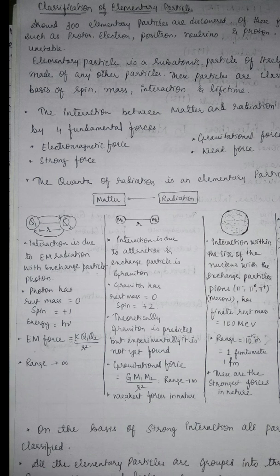These subatomic particles — we all know that we have an atom, and within it we have electrons, protons, and neutrons. Protons and neutrons are within the nucleus. These particles within the nucleus are known as subatomic particles, also called elementary particles. These elementary particles are divided on the basis of spin, mass, interaction, and lifetime.